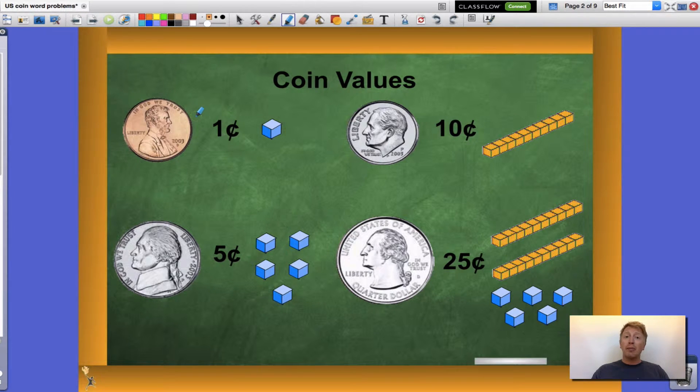Let's start with values. Remember a penny is worth one cent, a nickel is worth five cents, a dime is worth ten cents, and a quarter is worth twenty five cents.